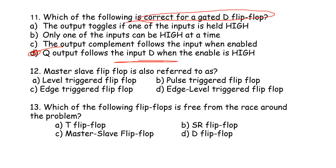It stores the value on the data line. The value is stored in the data line. Q output follows the input D when the enable is high. This is the correct answer.